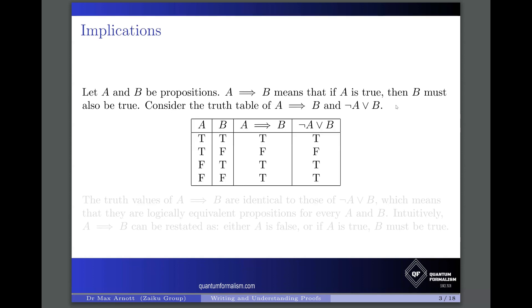We're going to look at truth tables. The truth table of A implies B is as follows. If A is true and B is true, then it's true that A implies B. If A is true and B is false, then it's false that A implies B — a true thing cannot imply a false thing. If A is false, however, it can imply a true thing, and if A is false it can also imply a false thing, so you get true and true in those columns.